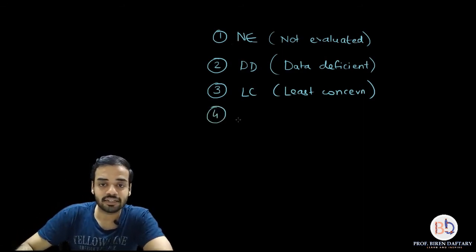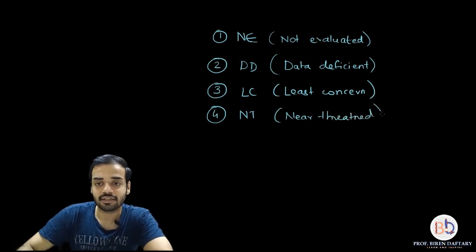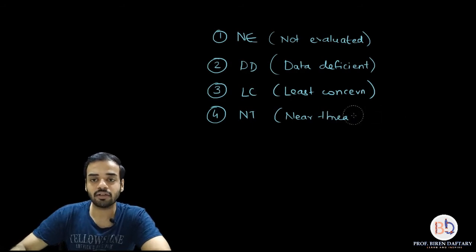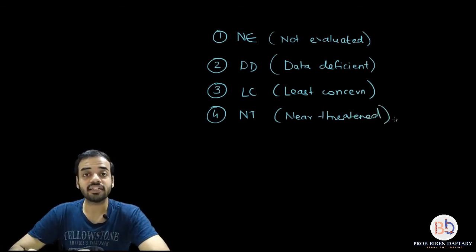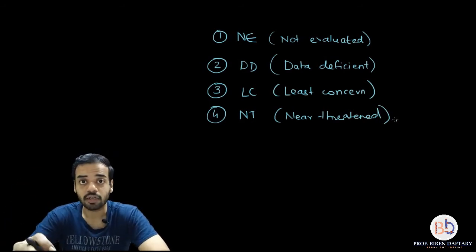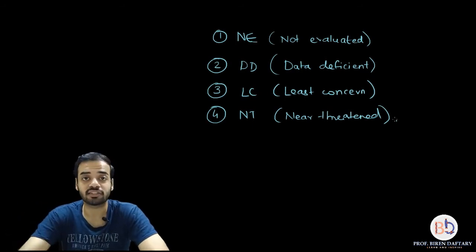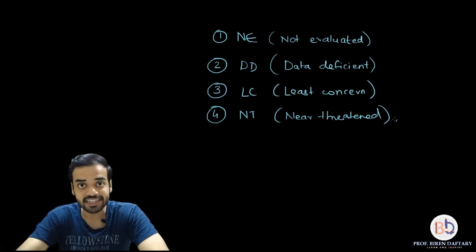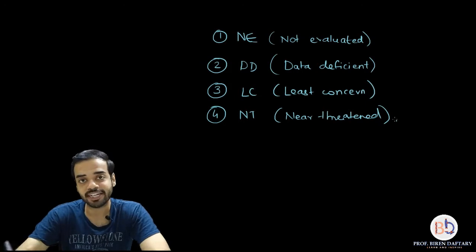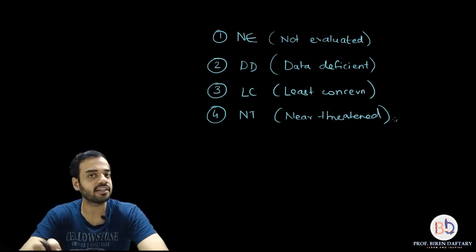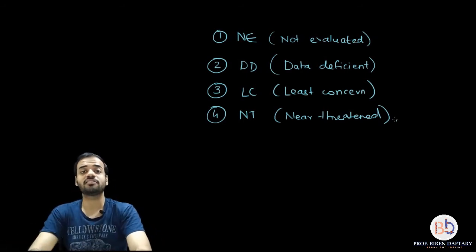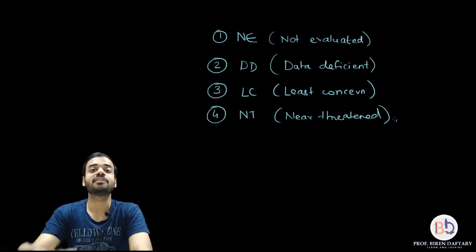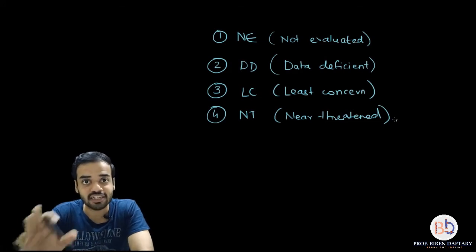The fourth category is NT, which means Near Threatened. Near threatened means there is a chance that species present in this category might reduce in number in the future. They are not under threat currently, but in the coming two, three, or five years their numbers might reduce. Species whose future is uncertain are placed in this category — almost threatened, but still not threatened.